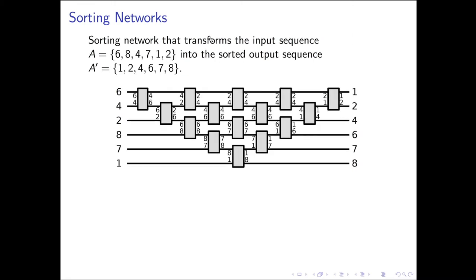Let's look at an example of how sorting networks are applied. We take input sequence [6, 8, 4, 7, 1, 2] and transform it using the sorting network. The first comparator acts on elements a0 and a1, swapping them to give 4 and 6. The second comparator takes wire one and wire two — swapping 6 and 2. The next two comparators can execute in parallel, followed by a couple more parallel stages — if you play this through, the final sequence on the wires is sorted.